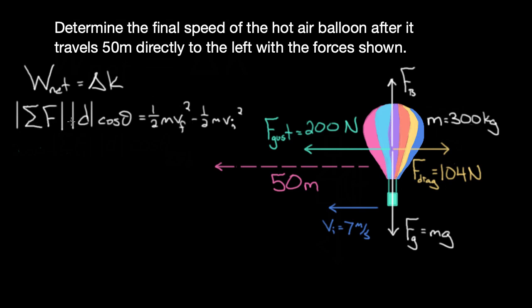For net force, vertical pieces don't matter—we're just looking horizontally. The vertical ones cancel. We have 200 to the left and 104 to the right, so we subtract those to get 96 to the left. We just want magnitude, so 96 newtons times the distance traveled, which is 50 meters.